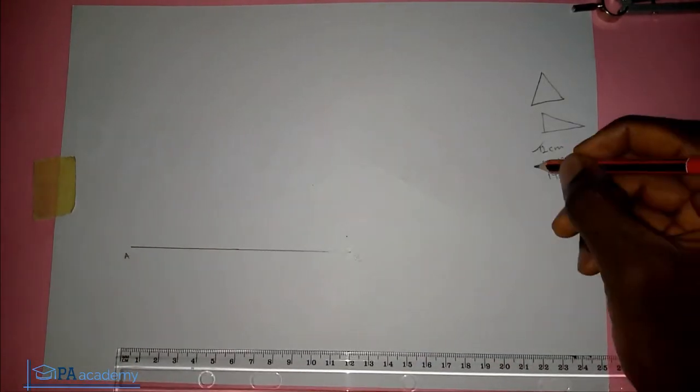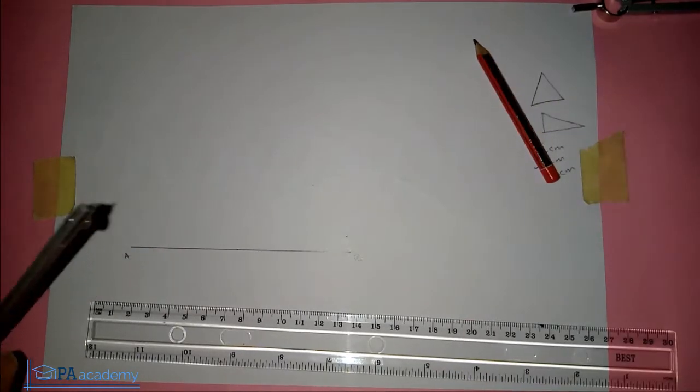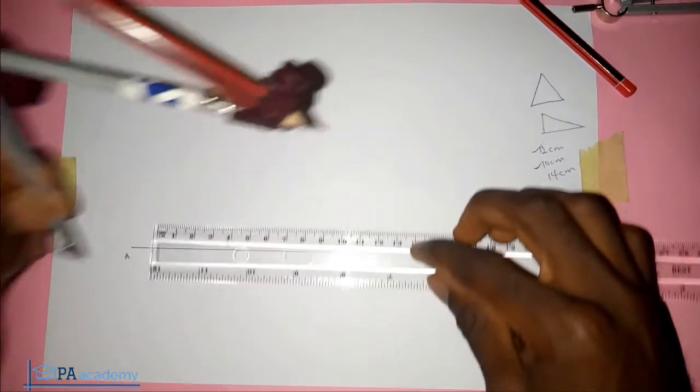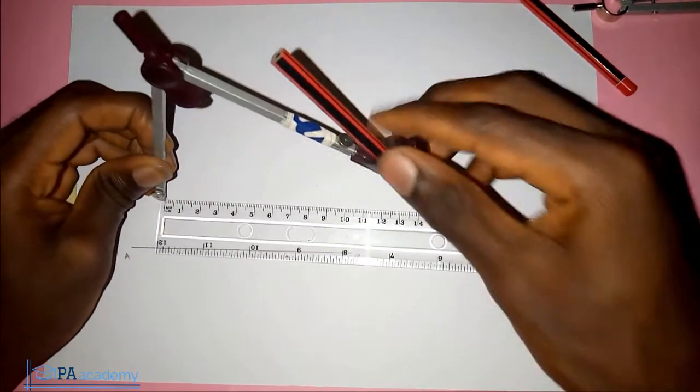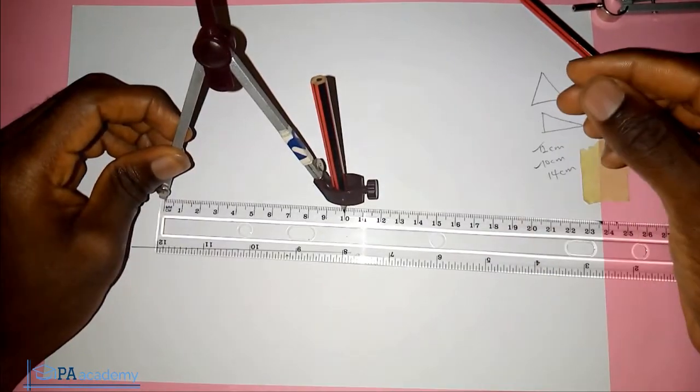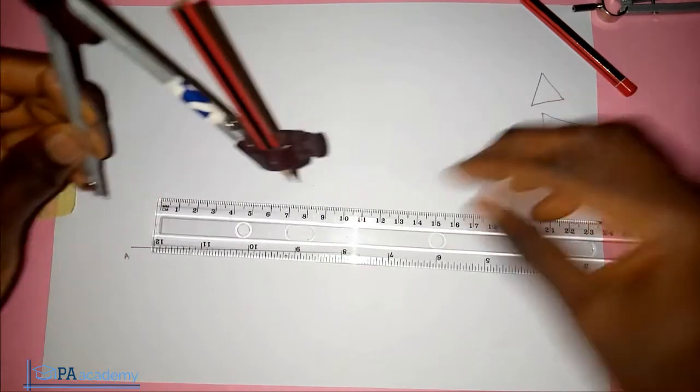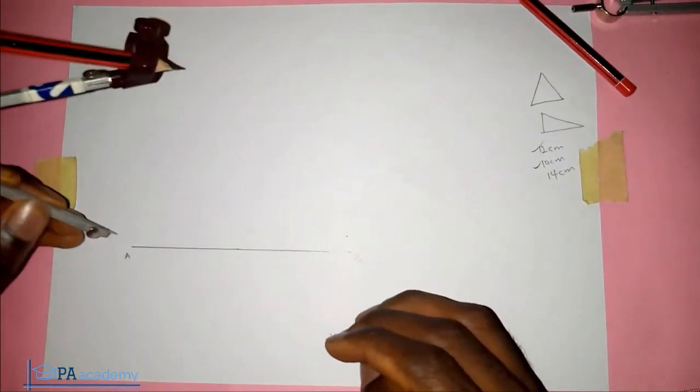The next length is 10 cm. So now, to get the 10 cm, what you are going to do is pick your compass and measure 10 cm on your compass. So you can see this is 10 cm on the compass. Now, since we are not given the points that we can use, you can just start from any point. So let me start from point A.